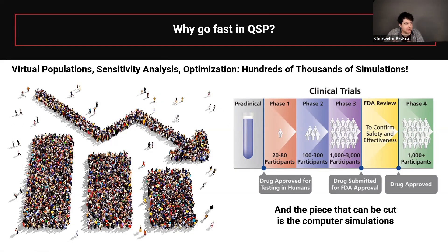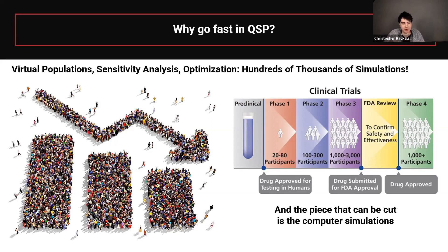The real reason why we need this speed is because the one piece that can be cut short in the whole clinical process is the computer simulation. You can't take the clinical trial and say we want to get this drug out quicker, so let's make the trial two months instead. What we've learned from the clients we've worked with is it's the computer simulation team that has the time crunch.